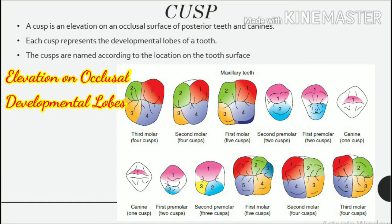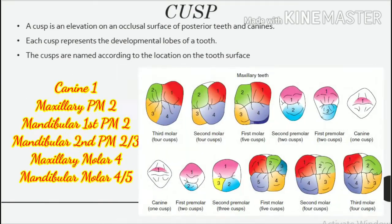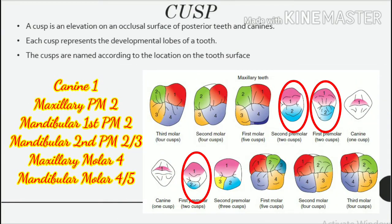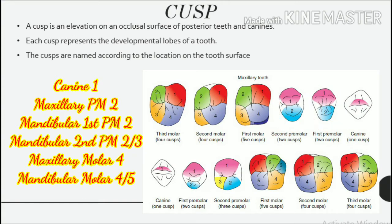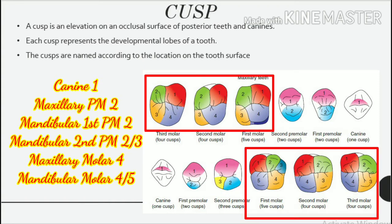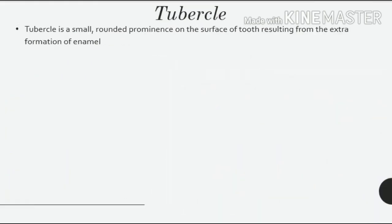The number of cusps may vary according to the type of teeth. Canines have one cusp. Maxillary premolars and mandibular first premolars usually have two cusps. Mandibular second premolars may have either two or three cusps. Maxillary molars have four cusps, and mandibular molars may have four or five cusps.